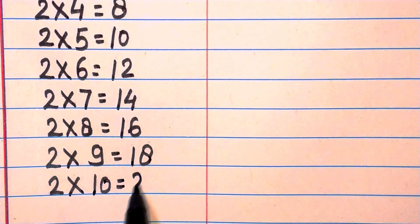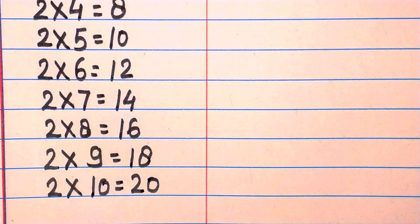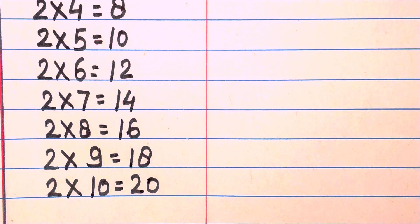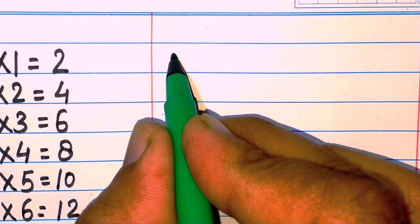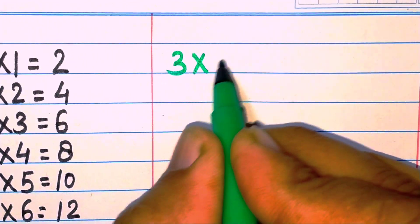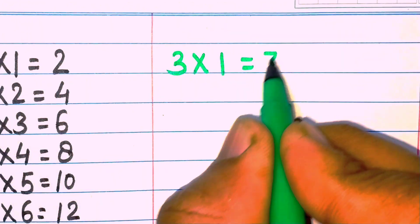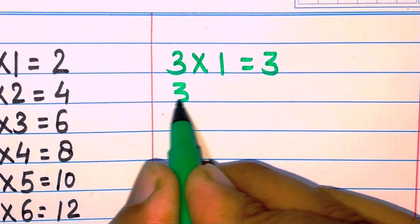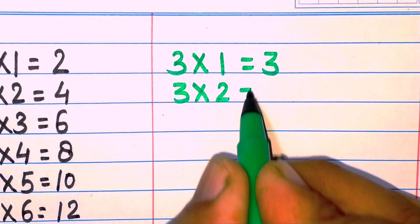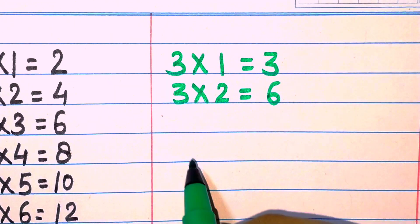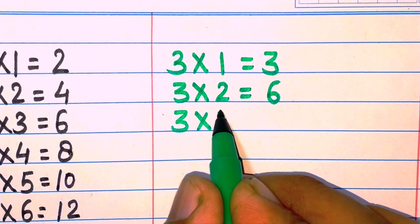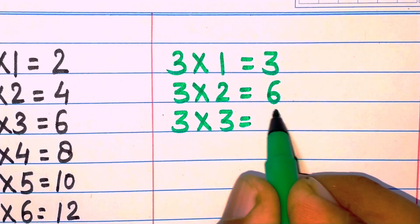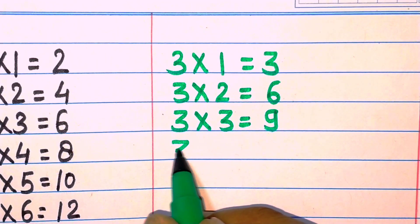Next, table of three. Three one are three, three two are six, three three are nine, three four are twelve.